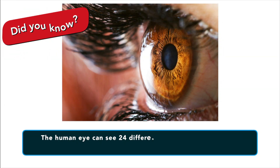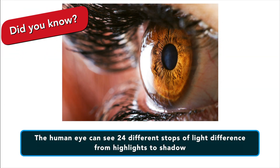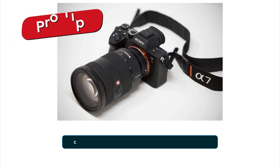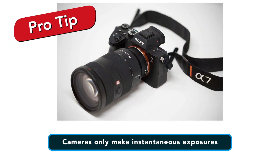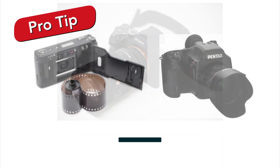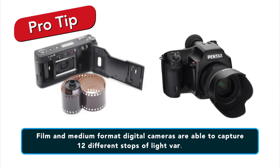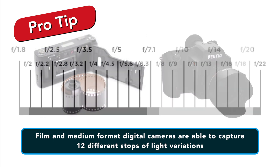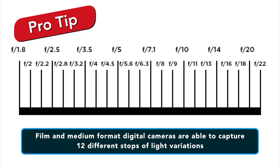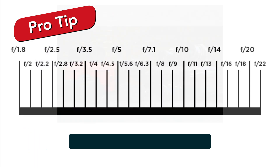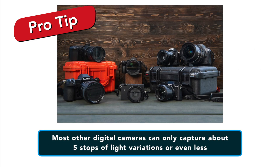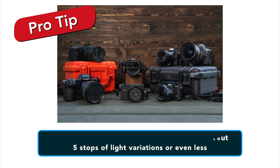The human eye can see 24 different stops of light from the highlights to the shadows. Cameras, however, only make instantaneous exposures, with film and expensive medium format digital cameras being able to capture 12 different stops of light variations, while most other digital cameras can only capture about five stops of light variations or even less.